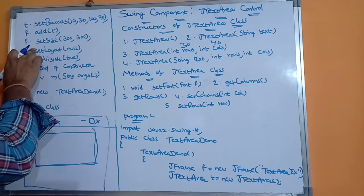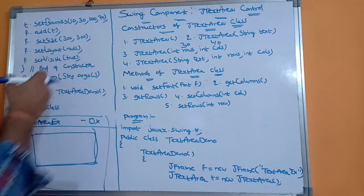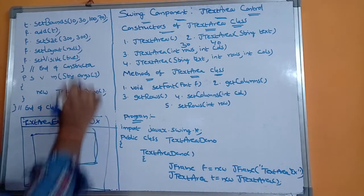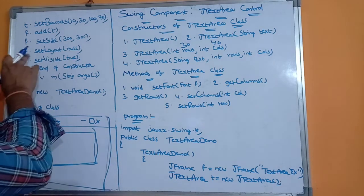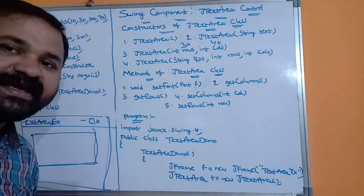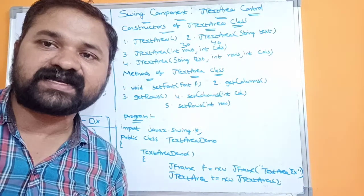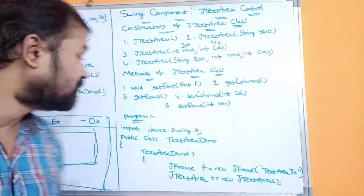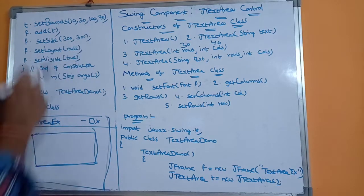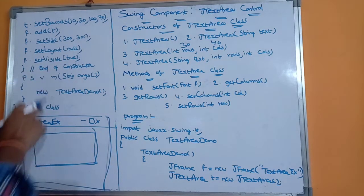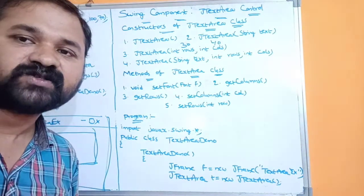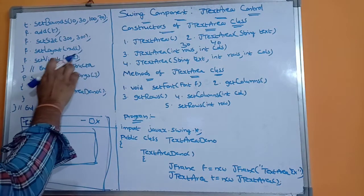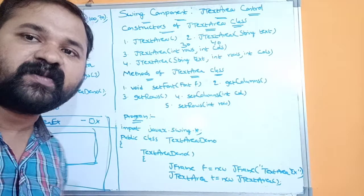Next, f.setSize(300, 300) sets the frame dimensions — the first 300 is the width and the second 300 is the height. Then f.setLayout(null) specifies that we are not using any layout manager; there are different types like BorderLayout, FlowLayout, GridLayout, and CardLayout, but here we use null. Finally, f.setVisible(true) makes the frame visible — without this, the frame remains invisible.